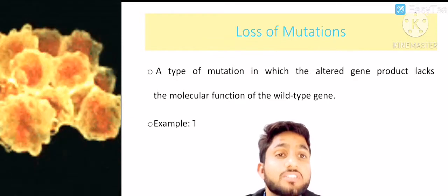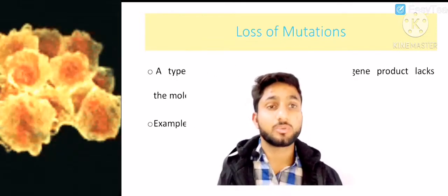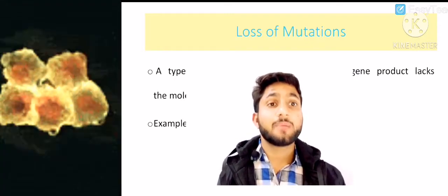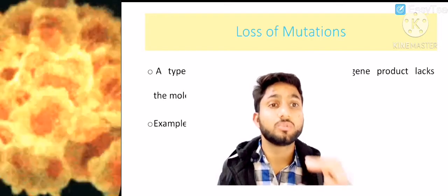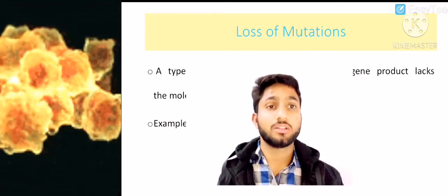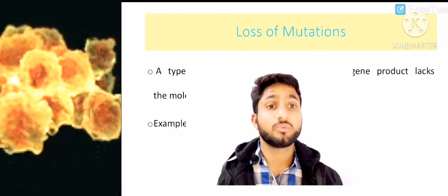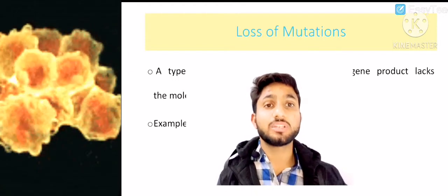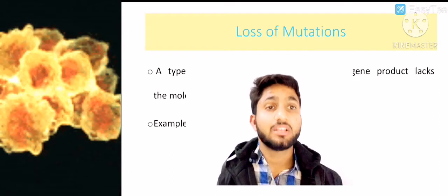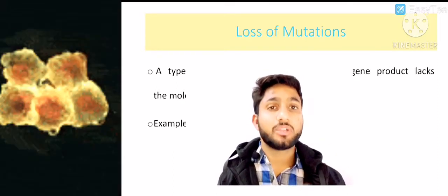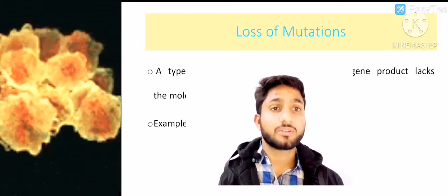Now let's talk about loss of function mutations. Loss of function mutations is a cellular mutation where genes lose their function, meaning that the required content of proteins is not produced at all. The protein required for normal cell growth is not produced, leading to abnormal protein content in the cell, making the cell abnormal. Normal cells are functional and important for our body, but abnormal cells are not.